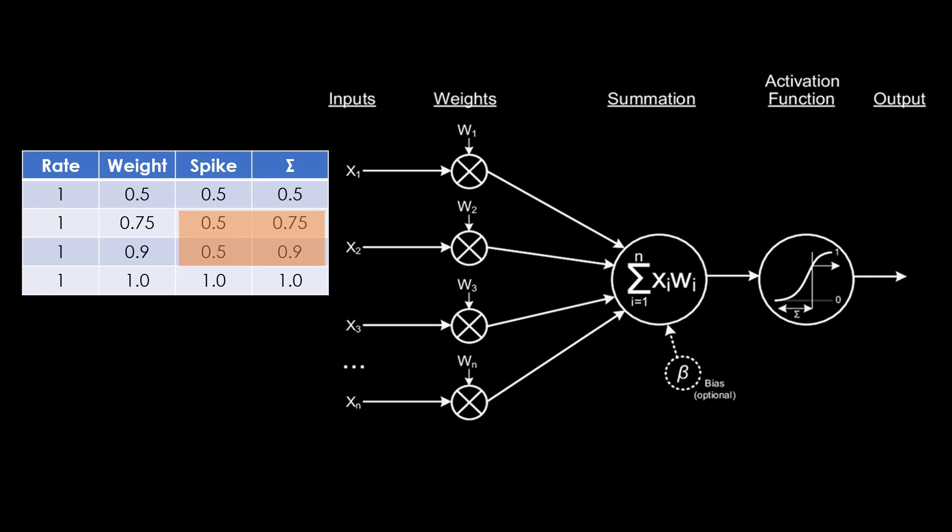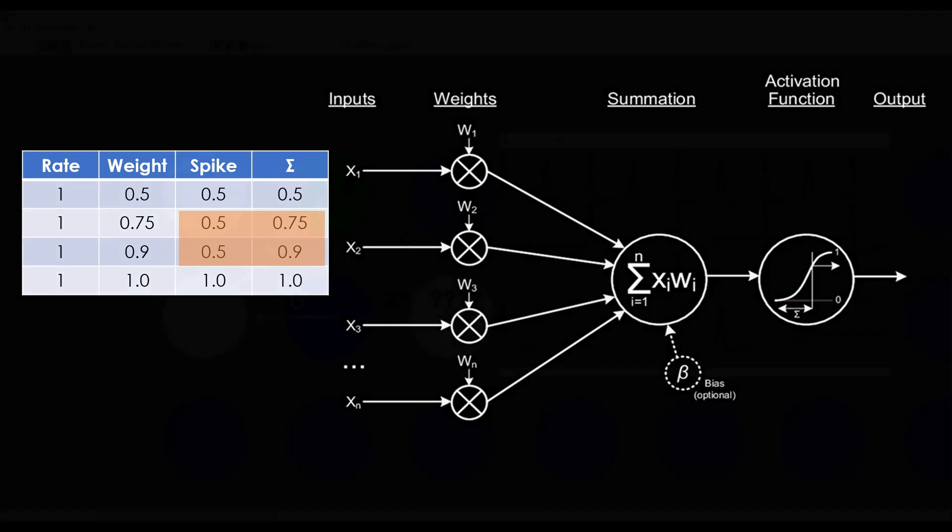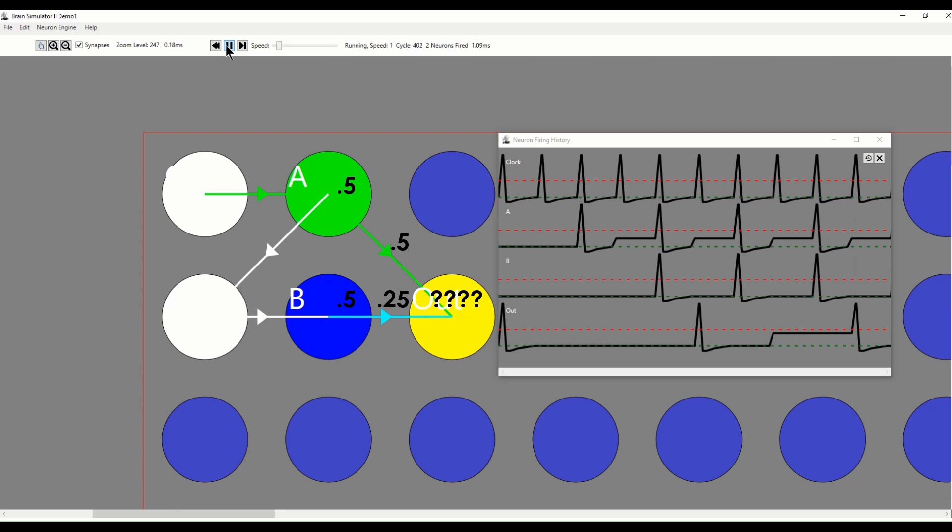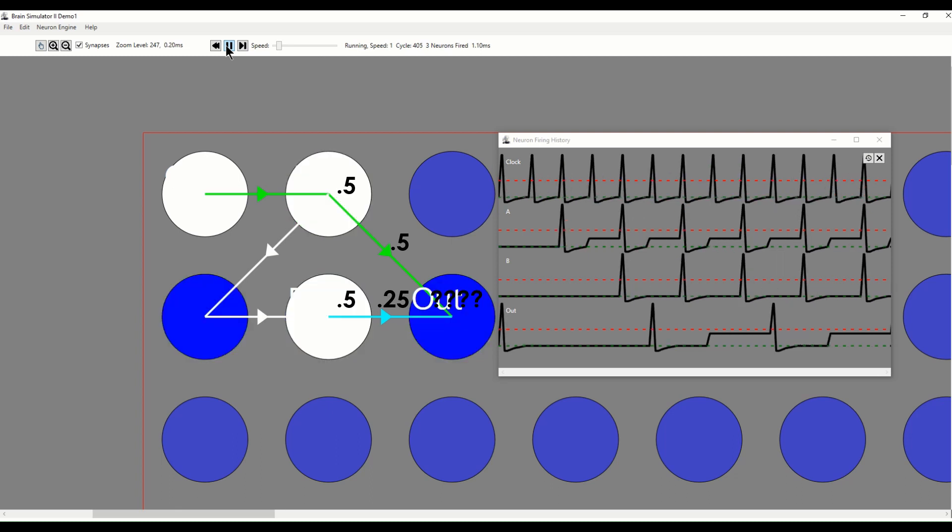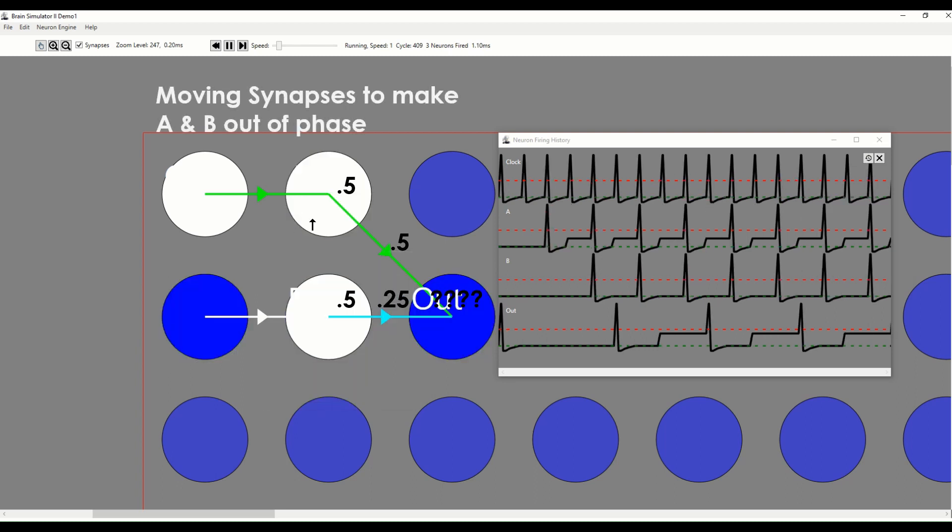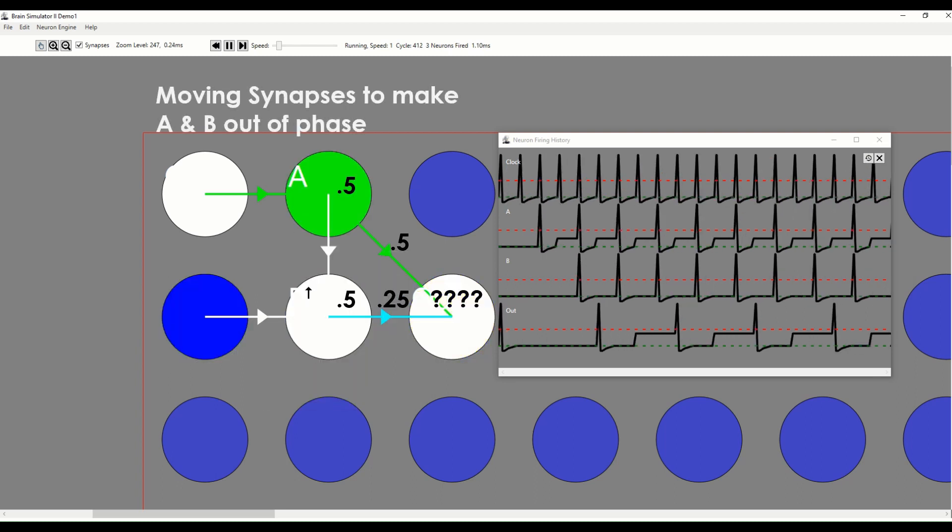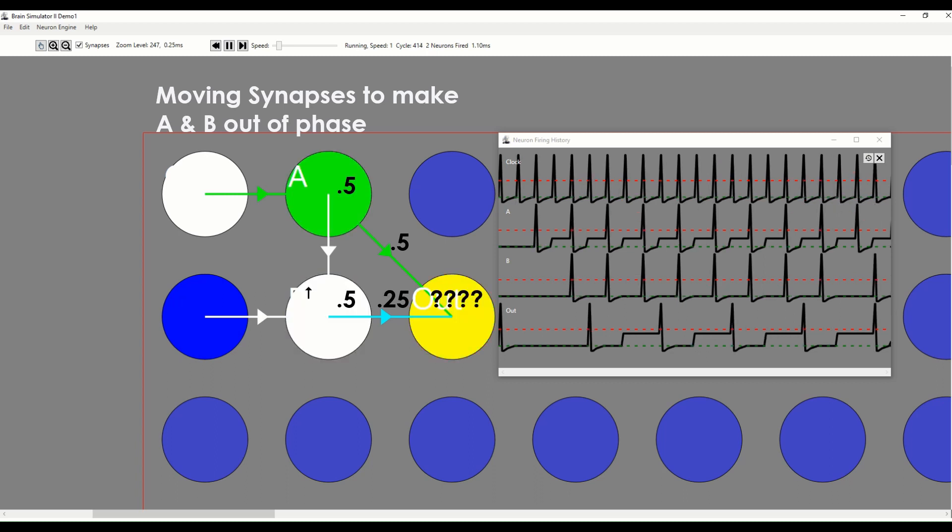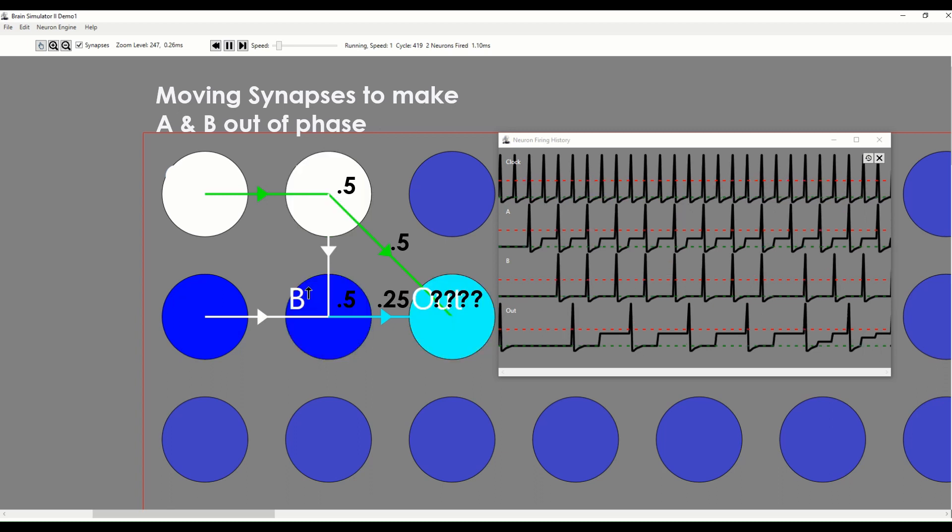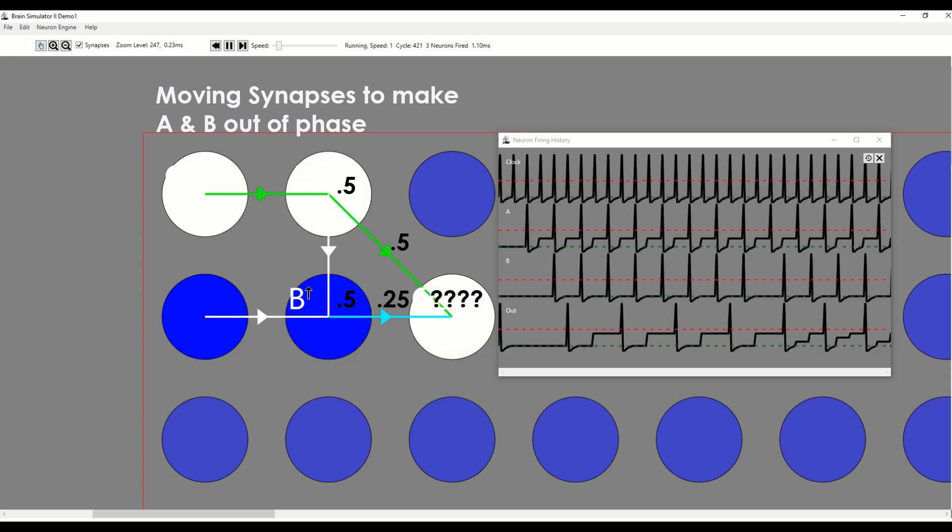For another illustration, let's make things a bit more complex with two input neurons, A and B, connected to our out neuron, each with a spiking rate of 0.5. A is connected with a weight of 0.5, and B with a weight of 0.25. The out spike rate is shown and is 0.25. But let's change things so A and B neurons are no longer spiking simultaneously. The output spiking frequency becomes 0.33.